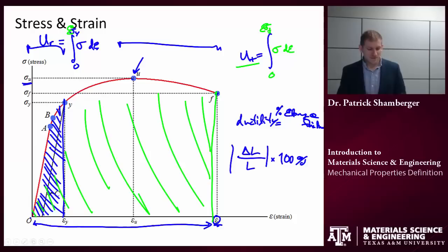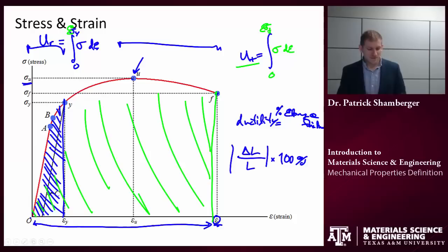Okay. So, in review, we talked about definitions. We talked about stress and strain, proportional limit, yield stress, yield point, elastic limit. We talked about the Young's modulus, which is also referred to as Young's tensile modulus. We talked about ultimate stress and strength, failure stress strength, which is also defined as the rupture point sometimes. And we talked about ductility. And finally, we talked about modulus of toughness and modulus of resilience.